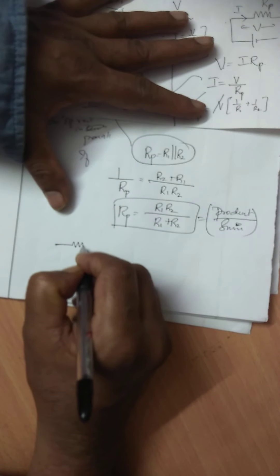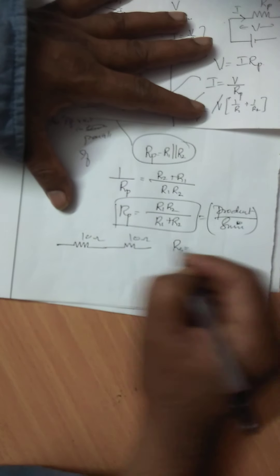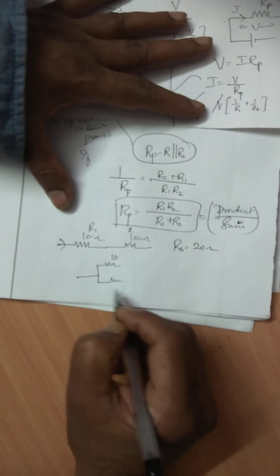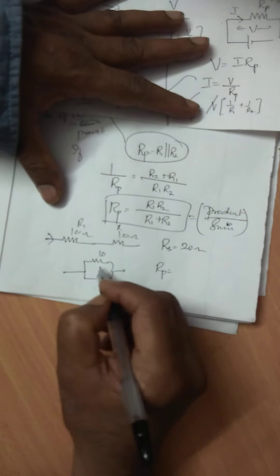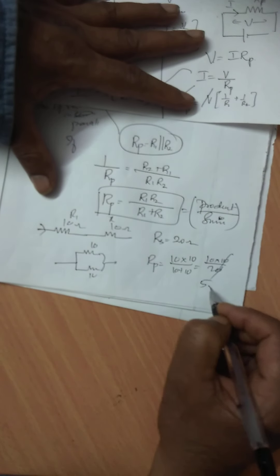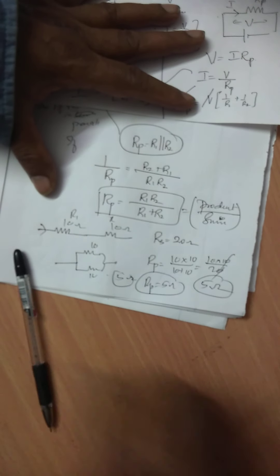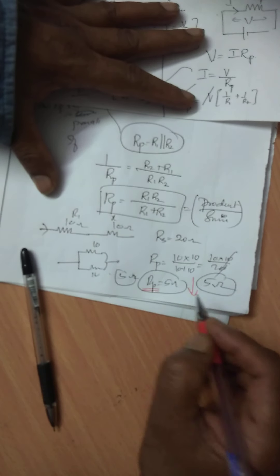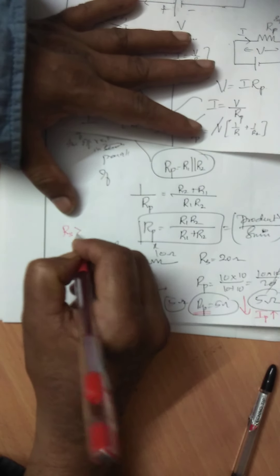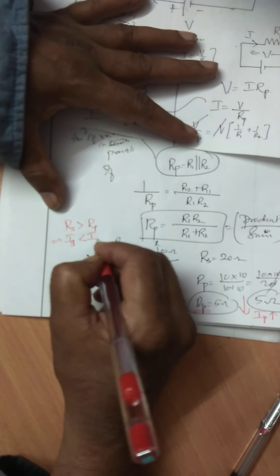For example, with R1 equals 10 ohm and R2 equals 10 ohm: in series, RS equals 10 plus 10 equals 20 ohm. In parallel, RP equals 10 times 10 divided by 10 plus 10 equals 100/20 equals 5 ohm. Resistance in series is greater than in parallel, which means current in the series combination is less than current in the parallel combination.